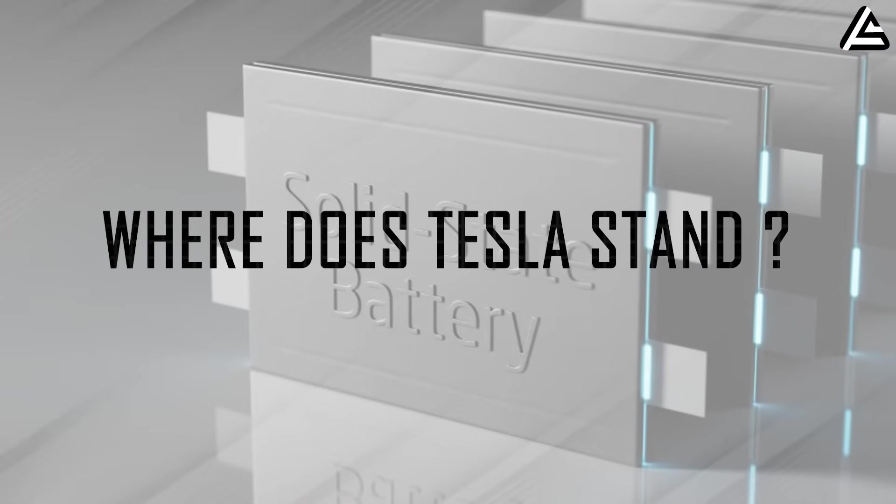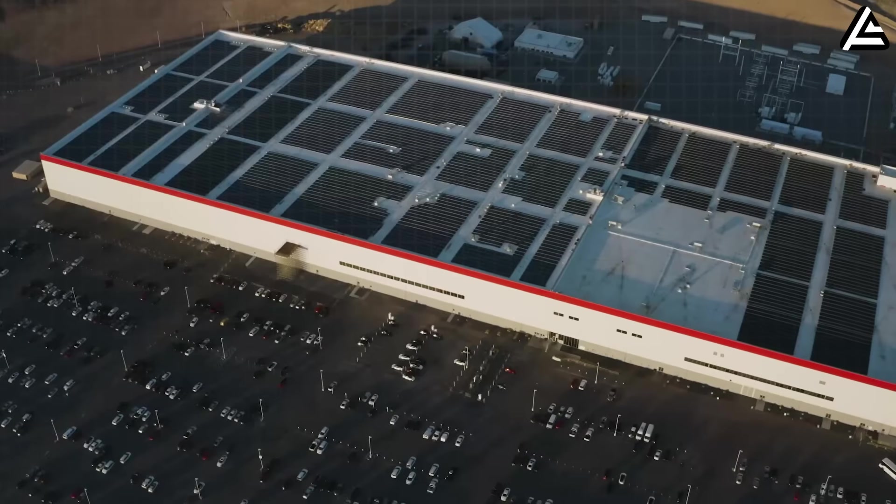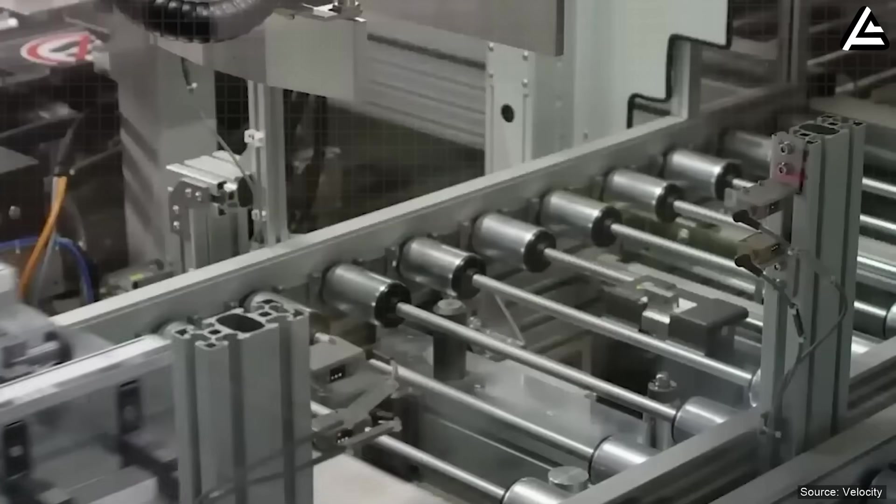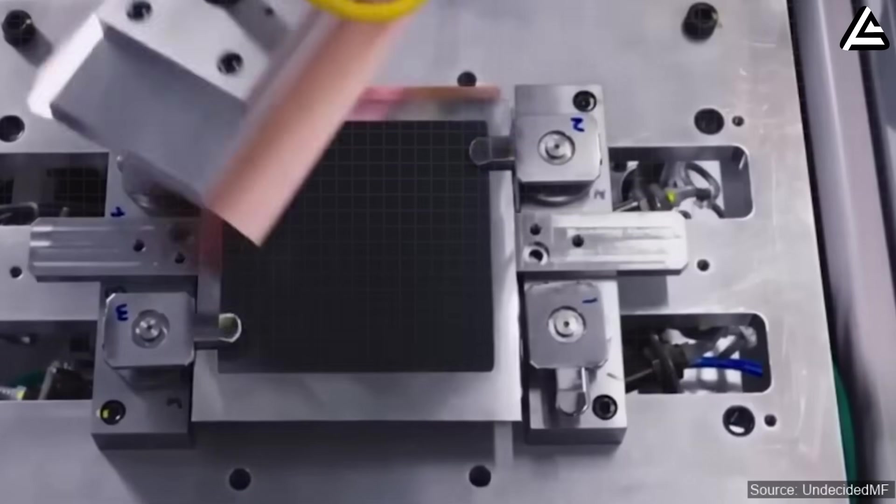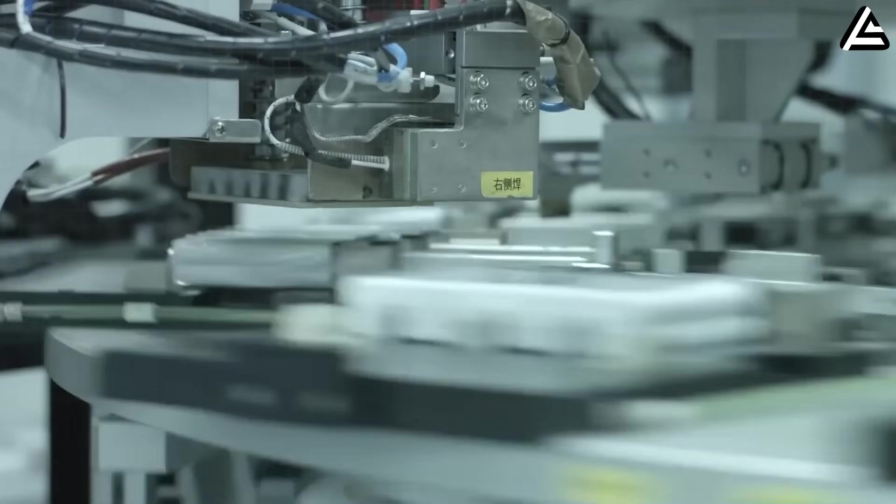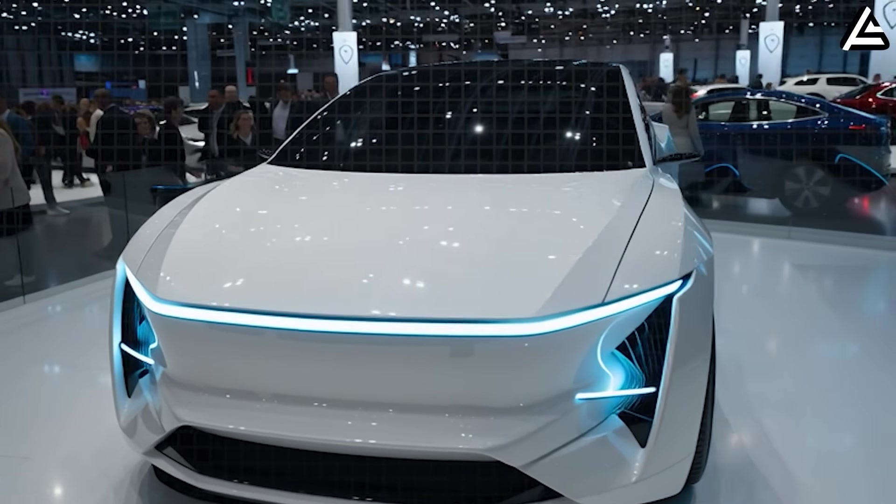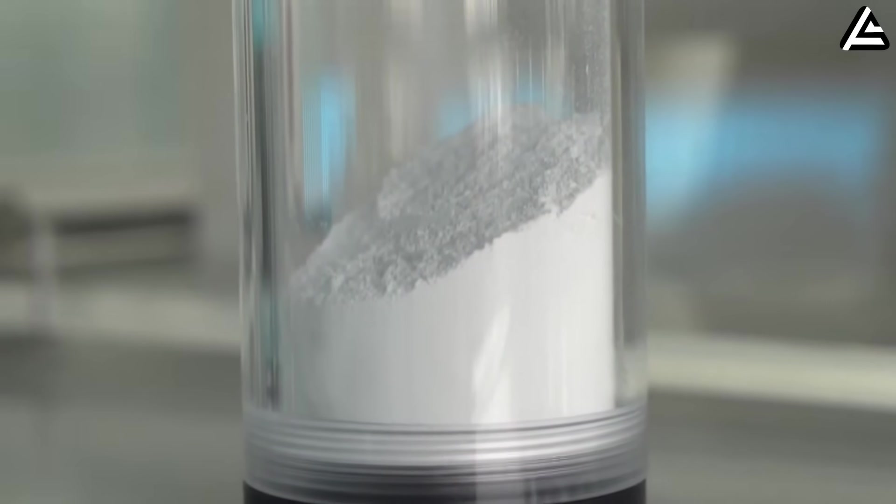Where does Tesla stand as solid-state production lines finally go live? For the first time in over a decade of battery innovation, Tesla is facing a genuine shift in the competitive landscape. With Chinese manufacturers activating 60 Ah to 75 Ah solid-state pilot lines, the pressure is no longer theoretical – it's industrial. And this is exactly why insiders say Tesla has accelerated its own solid-state program, aiming to deploy the chemistry first on the high-volume Model 2 platform.